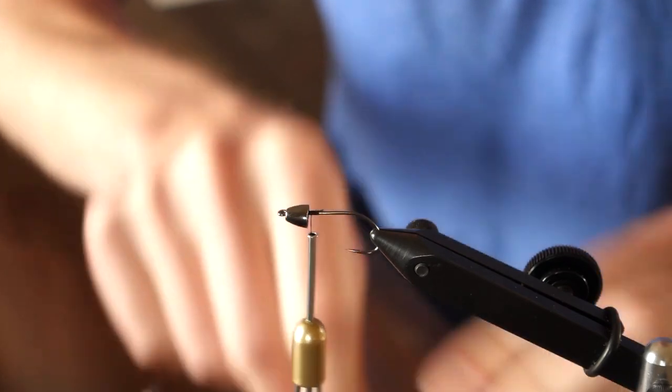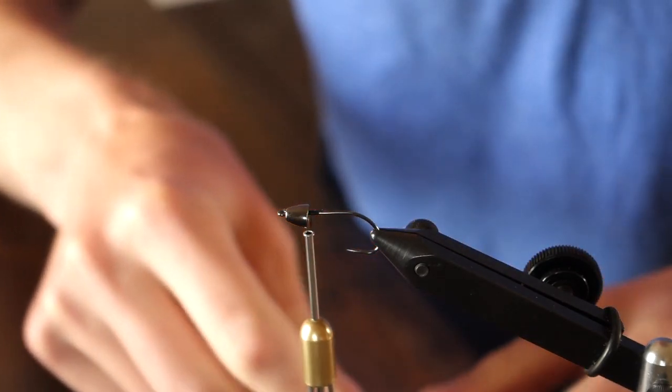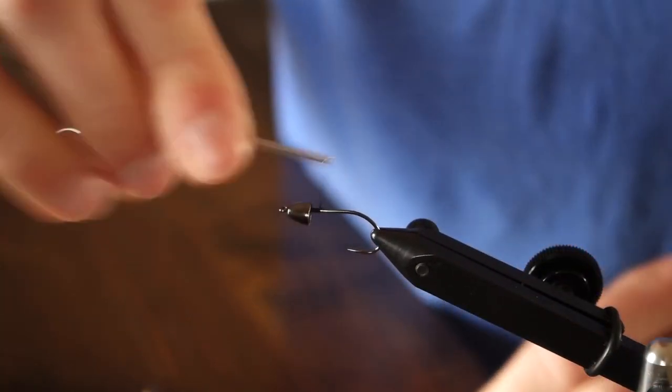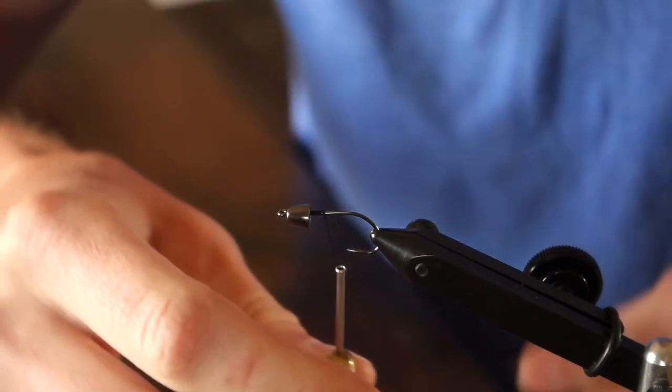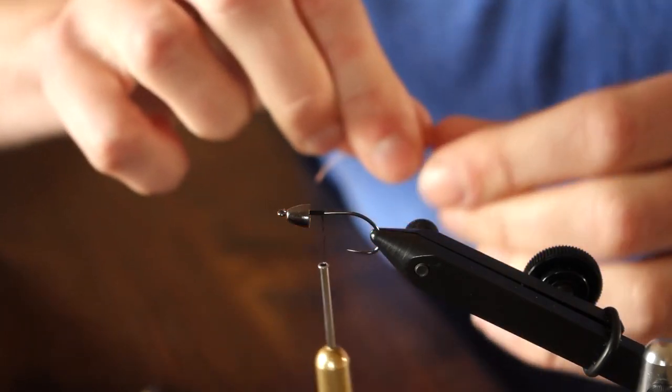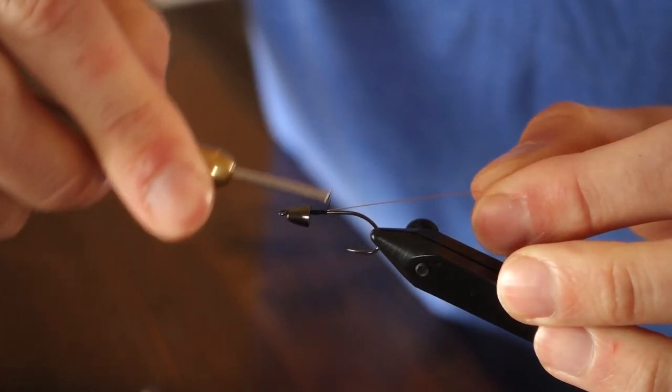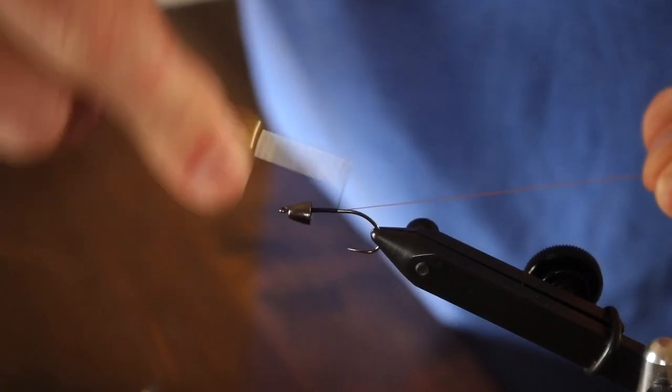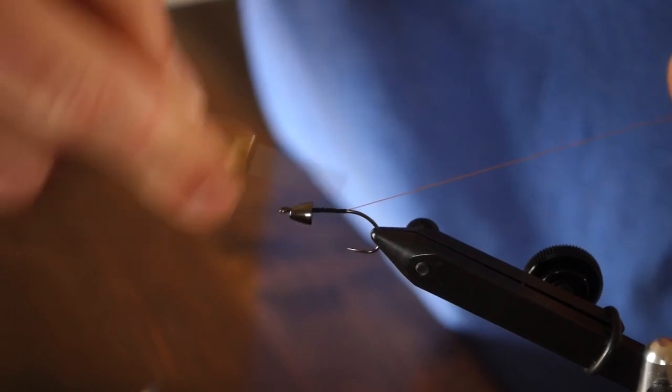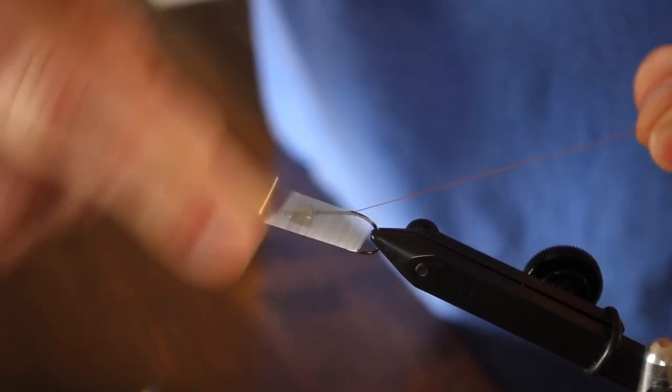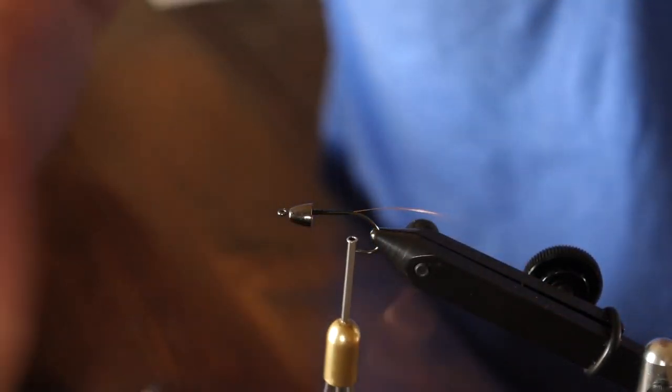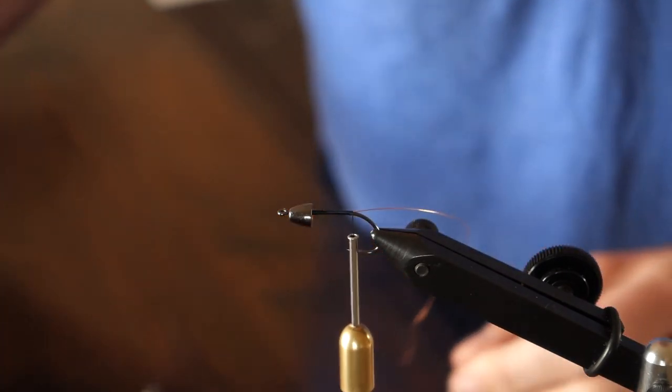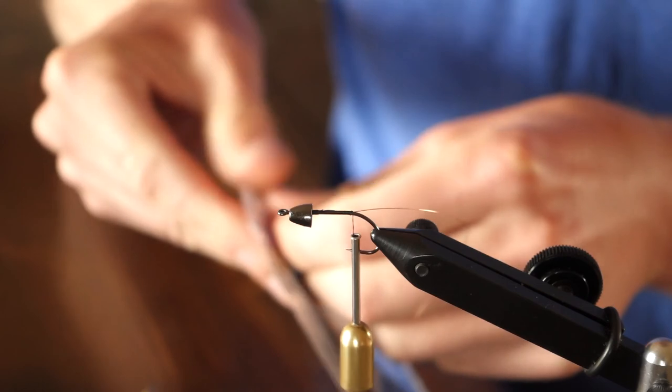Once I get back to the bend of the hook, I will go ahead and tie in my copper wire. This is just small copper wire, and we're going to be using this wire to add a little bit of durability to the pine squirrel zonker strips. You won't actually be able to see it once it's finished, but it'll just help hold everything together.